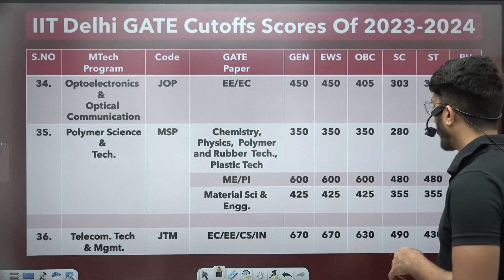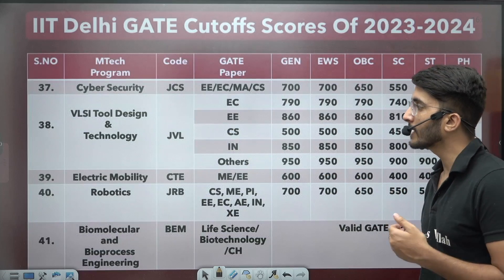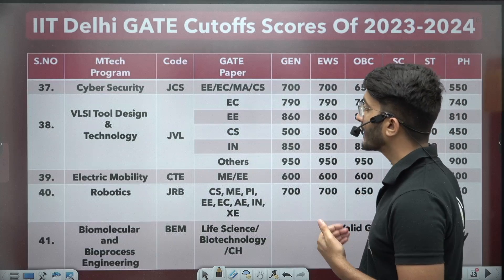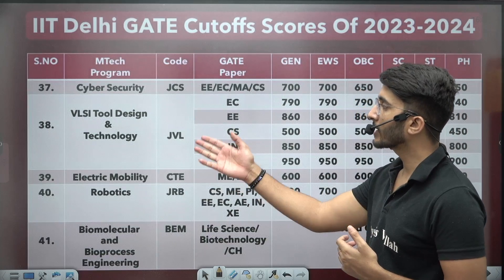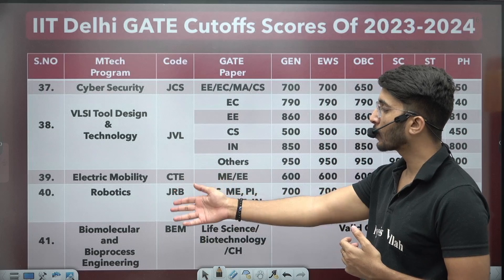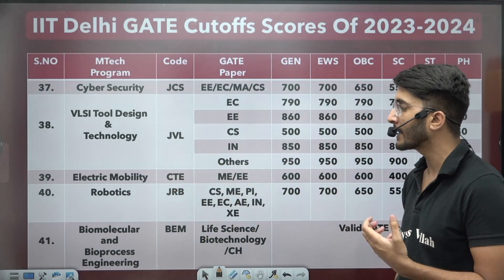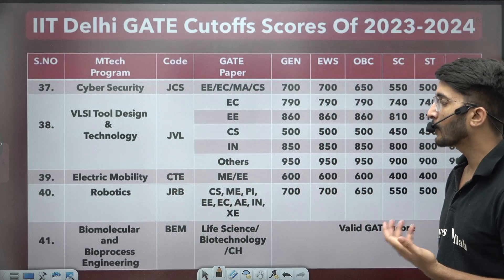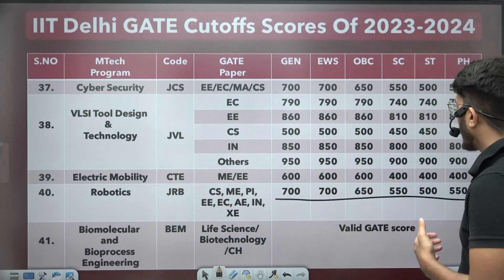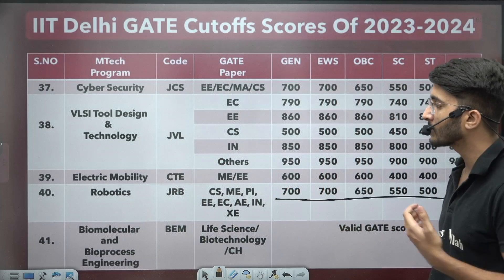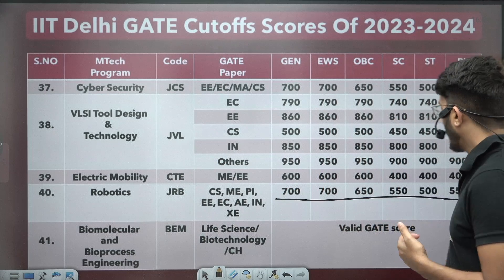For Polymer Science, Optoelectronics, and Telecom Technology, electrical and EC students can join with a lower GATE score. For EC, Electrical and CS students, courses like Cyber Security, VLSI, Electric Mobility, and Robotics are available. Robotics is a new course introduced in IIT Delhi about 2-3 years ago, and you can join with GATE marks above the required threshold.